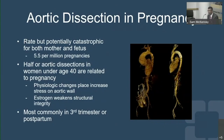The incidence is around five to six per million pregnancies based on published reports, but it is probably increasing given the changing risk factors in the maternal population. In fact, half of aortic dissections in women under 40 occur in relation to pregnancy.